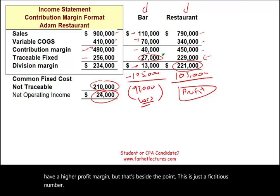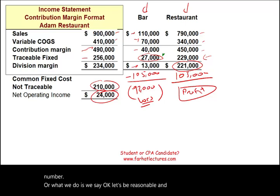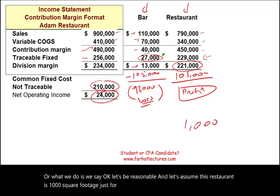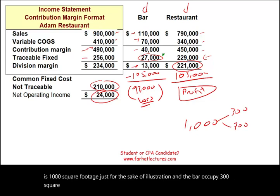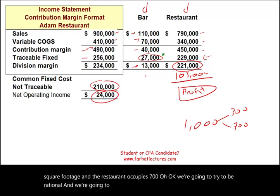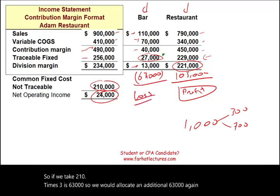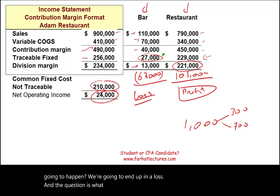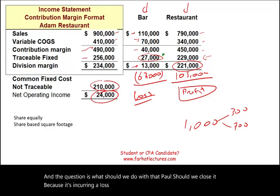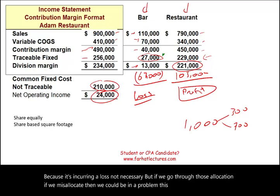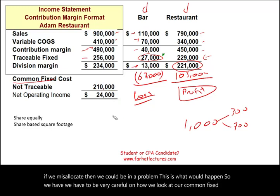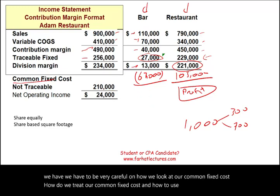Alternatively, suppose the restaurant is 1,000 square feet total — the bar occupies 300 sq ft and the restaurant 700 sq ft. A company might try to be rational and allocate 30% of $210,000 (which is $63,000) to the bar based on square footage. Even so, the bar would show a loss, leading to the same wrong conclusion that it should be closed. We have to be very careful about how we treat common fixed costs and how we use this information for business decisions. That's the whole purpose of this analysis.